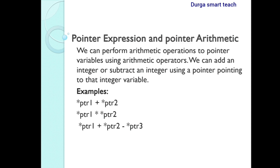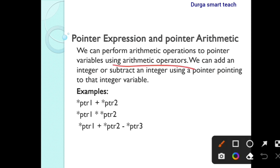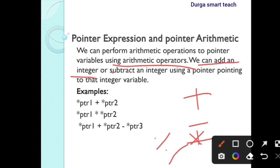We can perform arithmetic operations on pointer variables using arithmetic operators — that is plus, minus, multiplication, division, and modulo division. We can add an integer or subtract an integer using a pointer pointing to that integer variable.